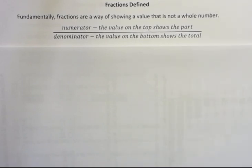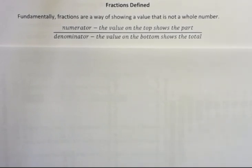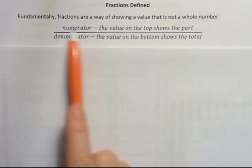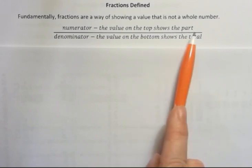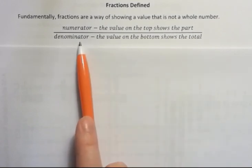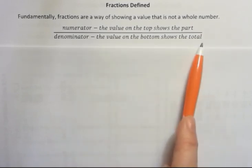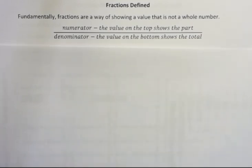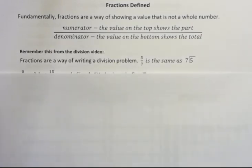Fundamentally, fractions are a way of showing a value that is not a whole number. The number on the top is the numerator, and that value shows the part that we're talking about. The denominator is the value on the bottom that shows the total parts in the whole situation.